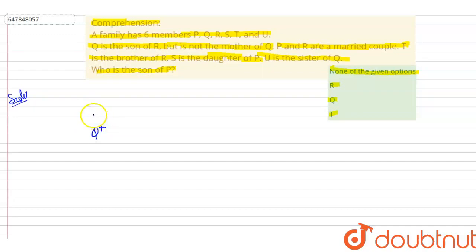Q is male, so I will indicate this with a plus sign. And I'll write R above. For R, I don't know yet from this line whether they are male or female. But ahead it's written "but is not the mother of Q." That means they are not the mother, which means they become the father. So I'll put a plus sign.